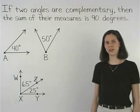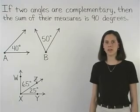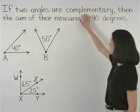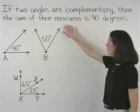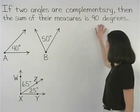The definition of complementary angles states that if two angles are complementary, then the sum of their measures is 90 degrees.